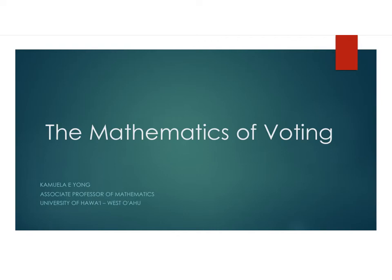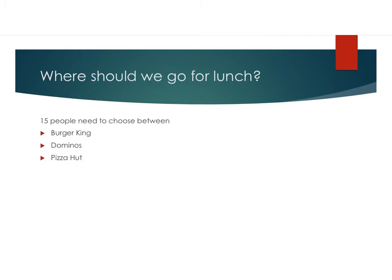Today we're going to talk about the mathematics of voting. Let's consider the scenario where we need to choose where to go for lunch. We have 15 people that need to decide, and they're going to choose between Burger King, Domino's, and Pizza Hut.